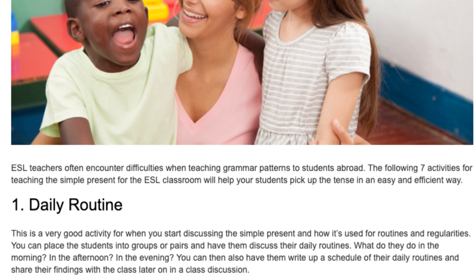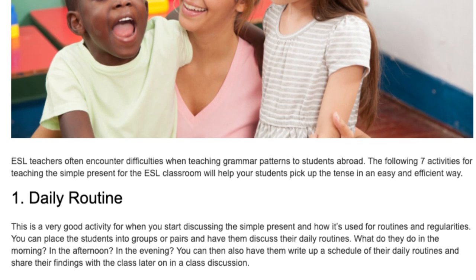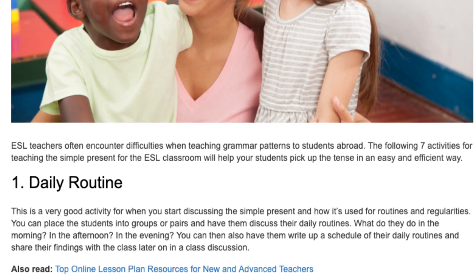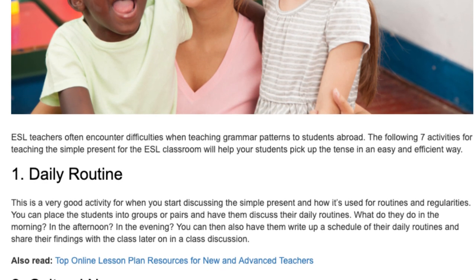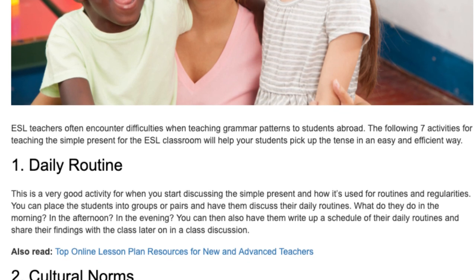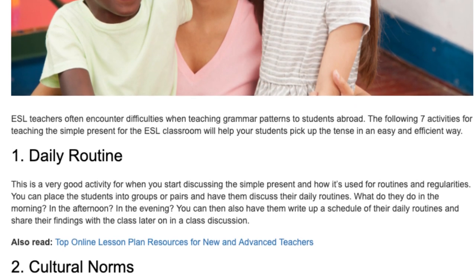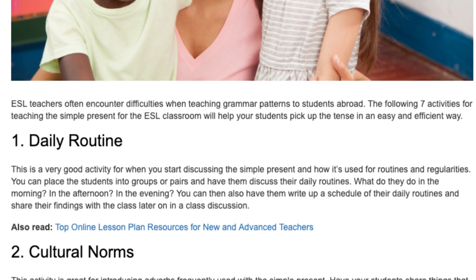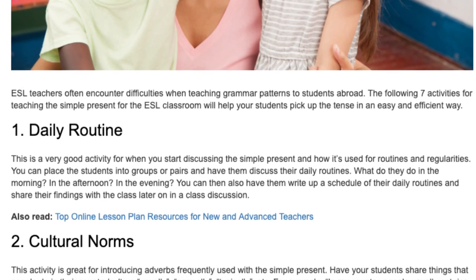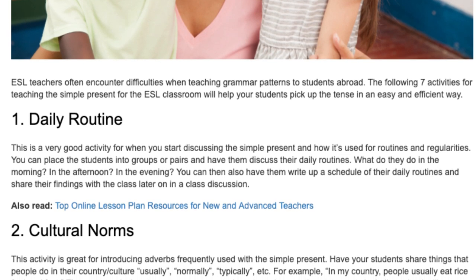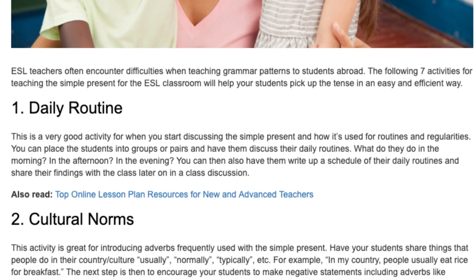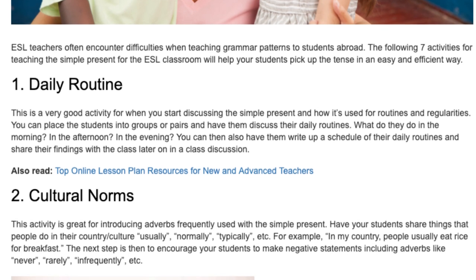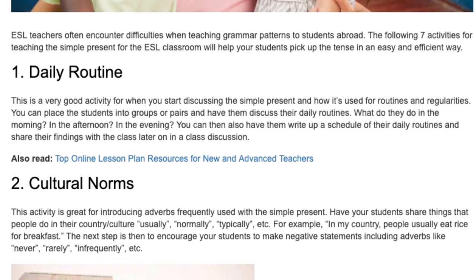Activity 1: Daily Routine. This is a very good activity for when you start discussing the simple present and how it's used for routines and regularities. You can place the students into groups or pairs and have them discuss their daily routines — what do they do in the morning, in the afternoon, in the evening? You can then have them write up a schedule of their daily routines and share their findings with the class in a class discussion.